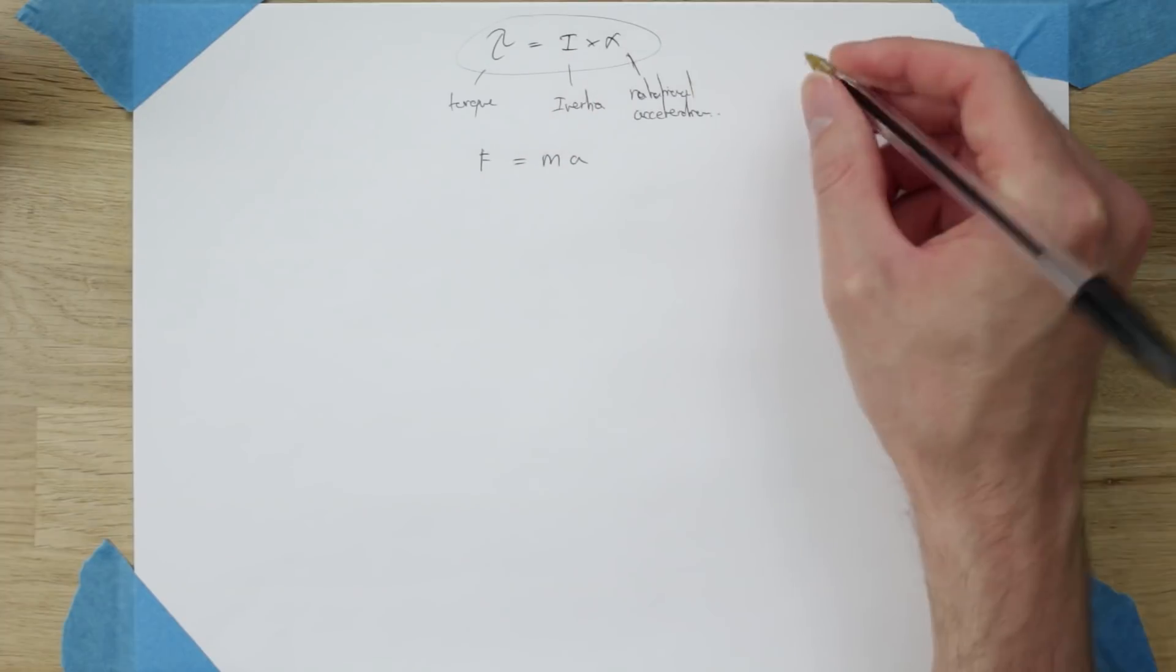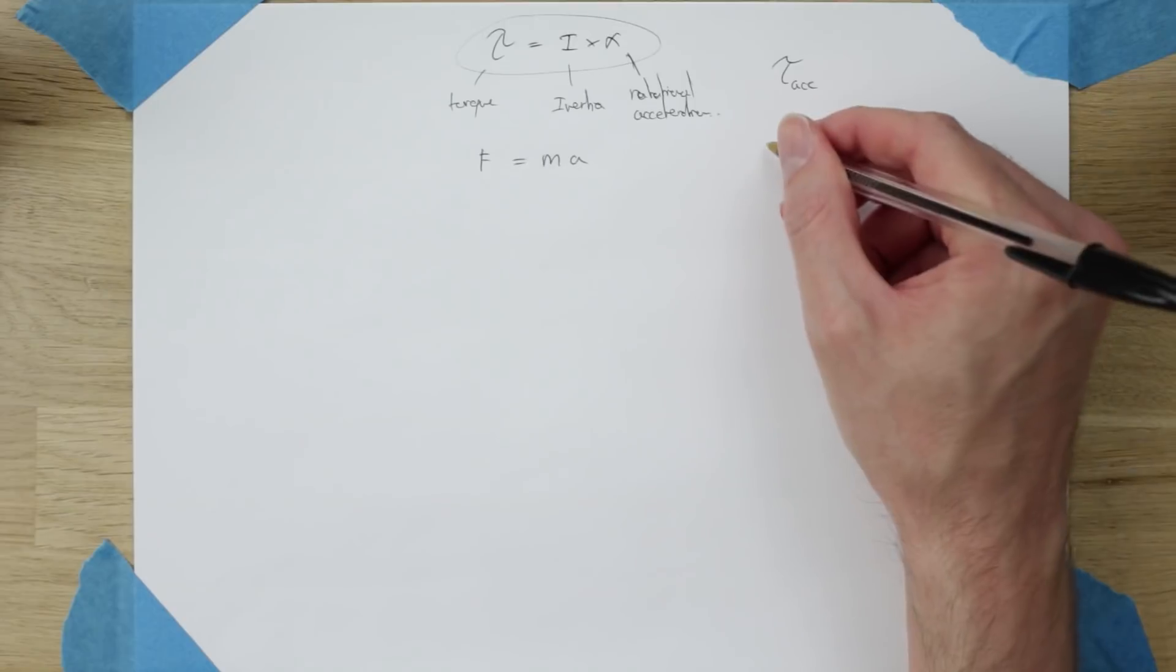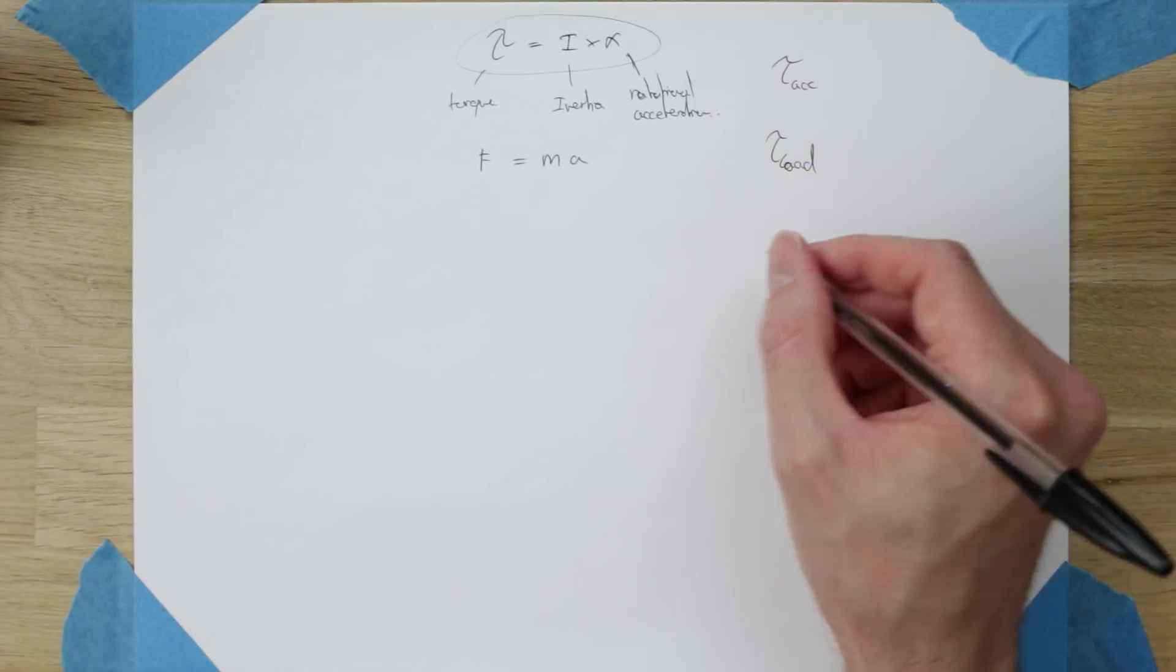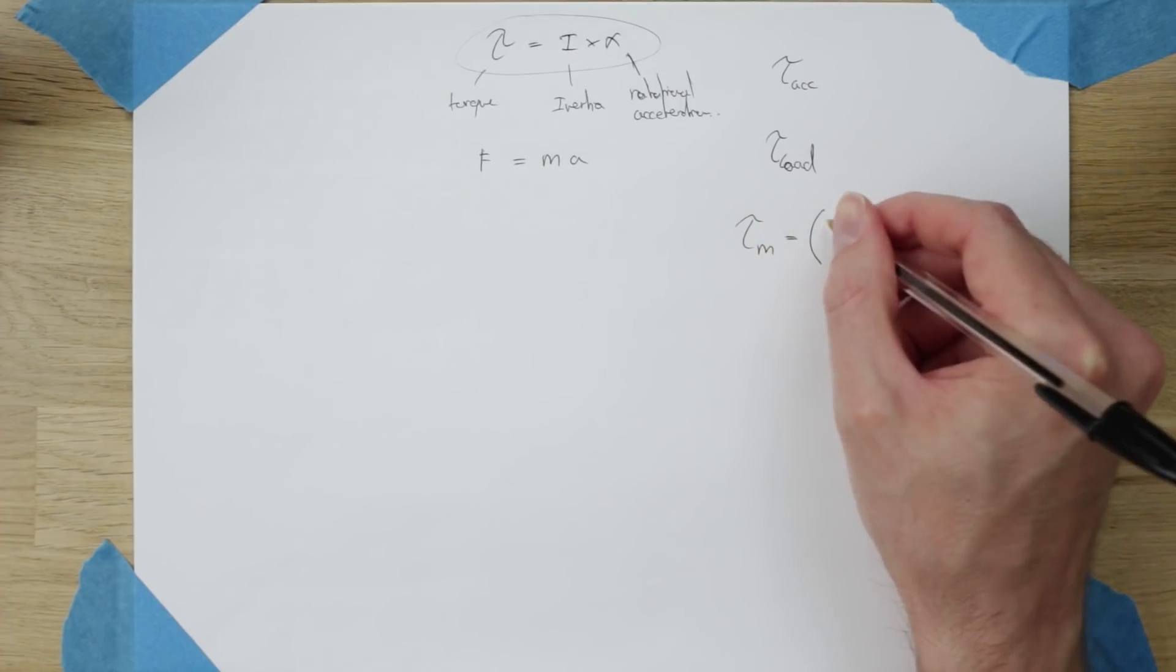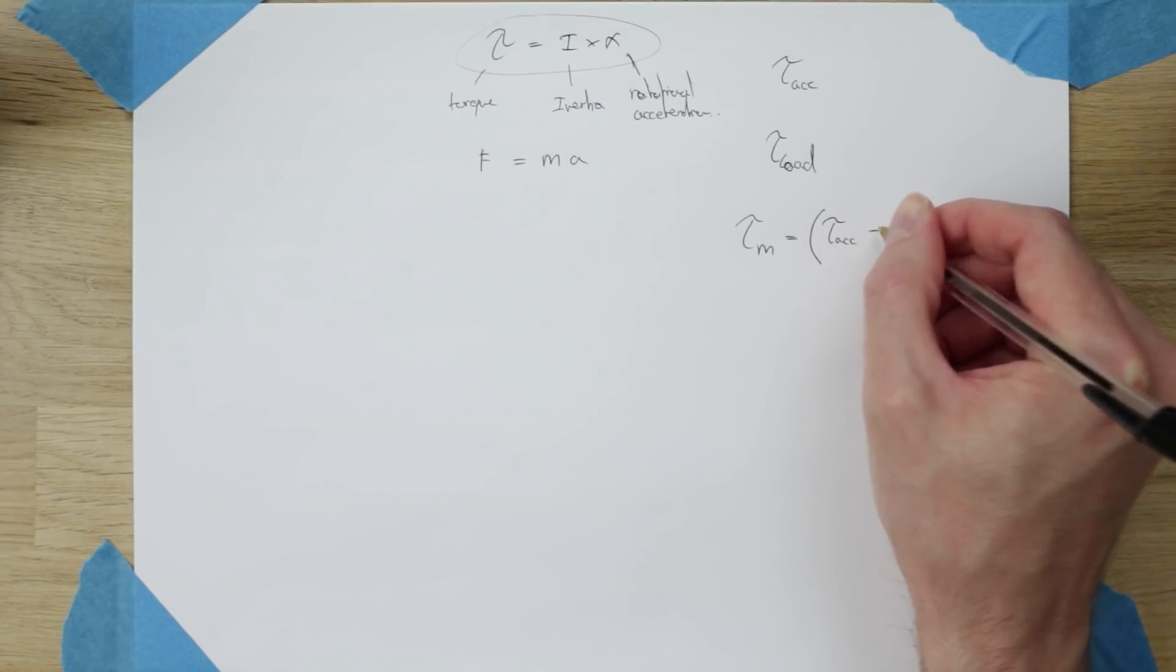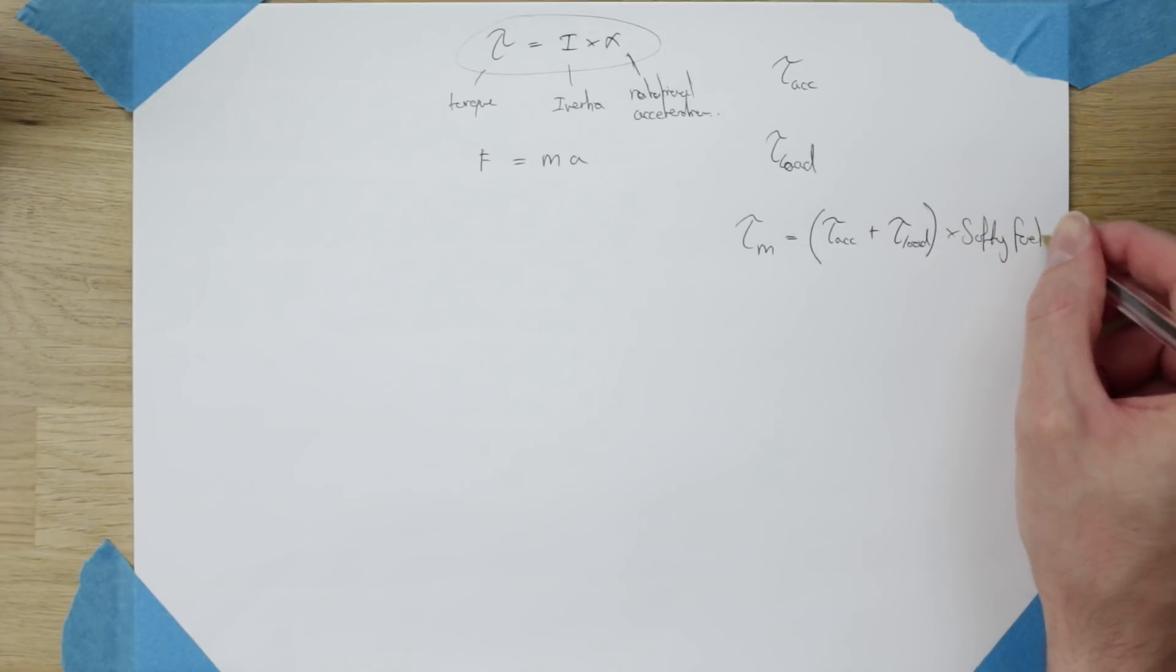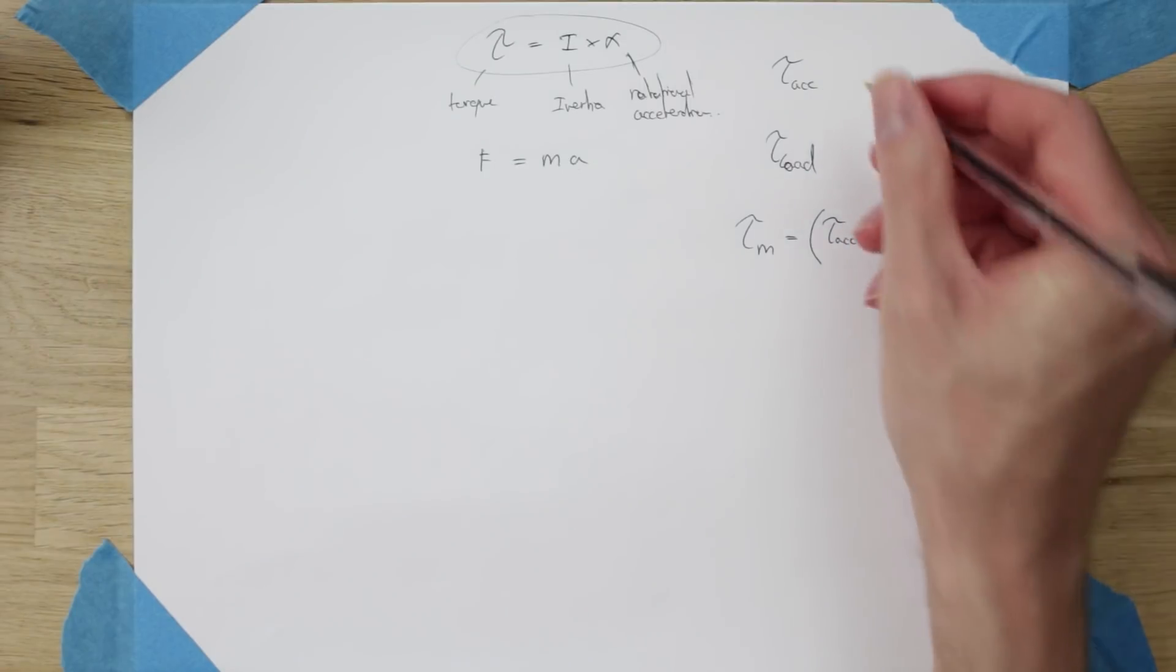So this torque breaks down into two things: the acceleration torque and the load torque. The sum of those two torques will give us the torque we need for the motor. So the motor torque is acceleration torque plus the load torque. We also add in a safety factor here but we'll come to that at the end.